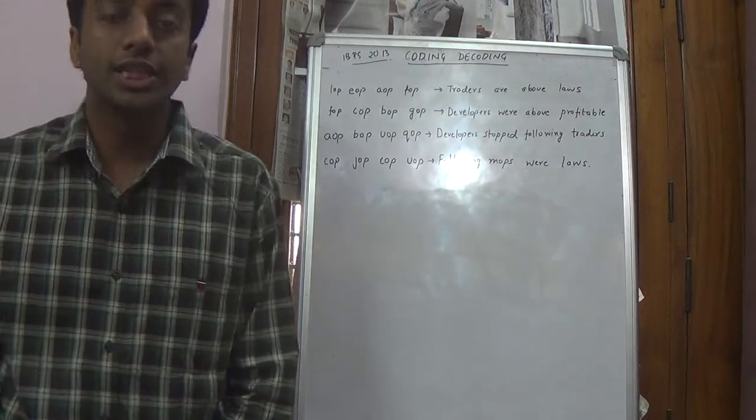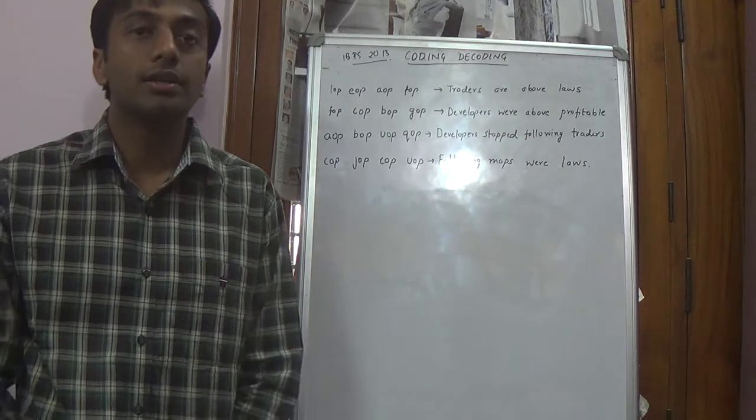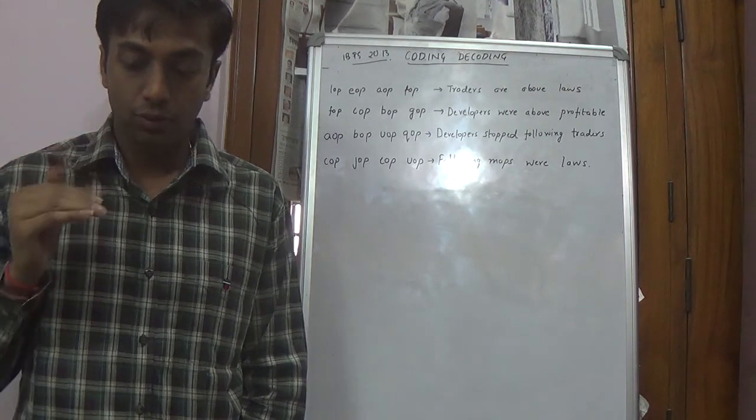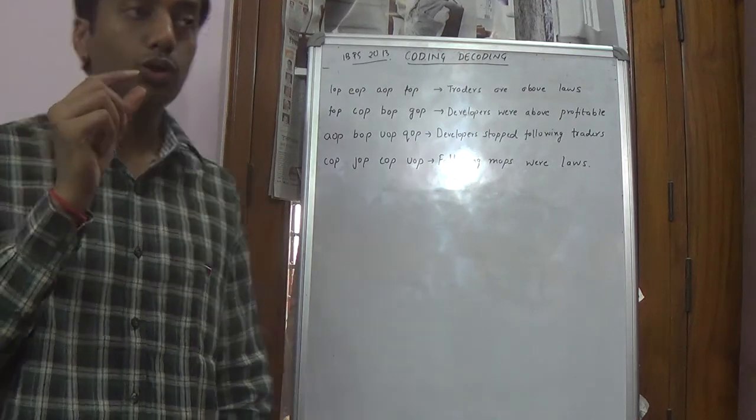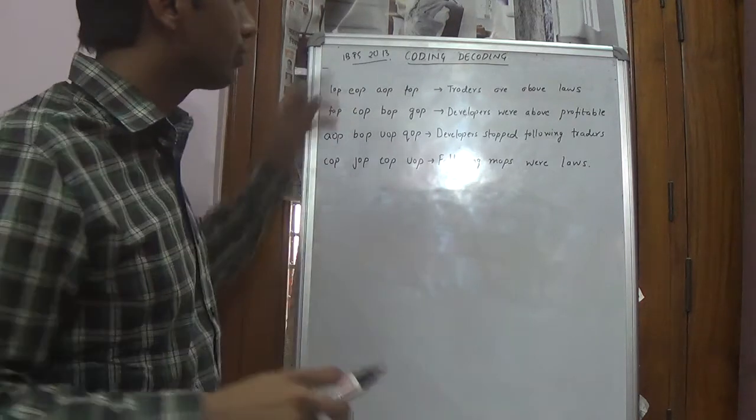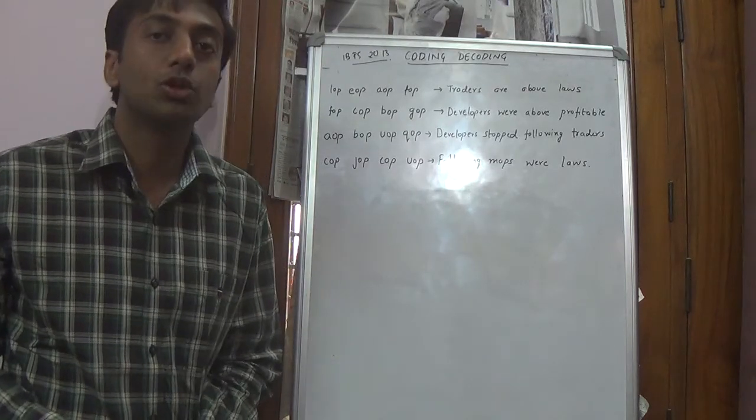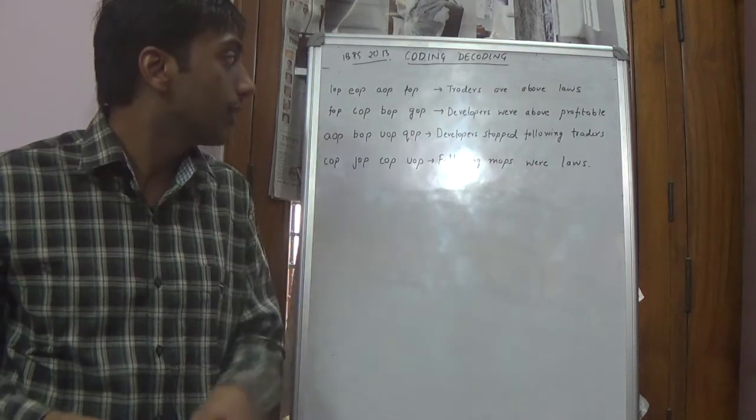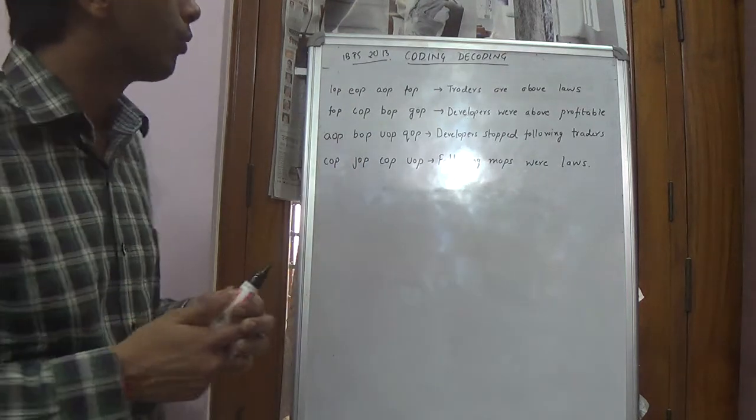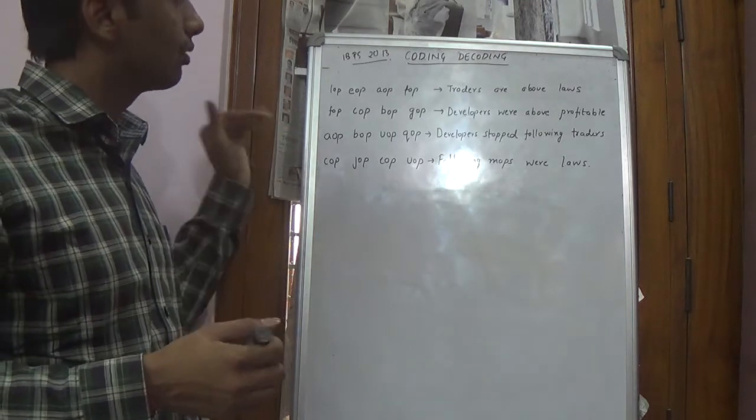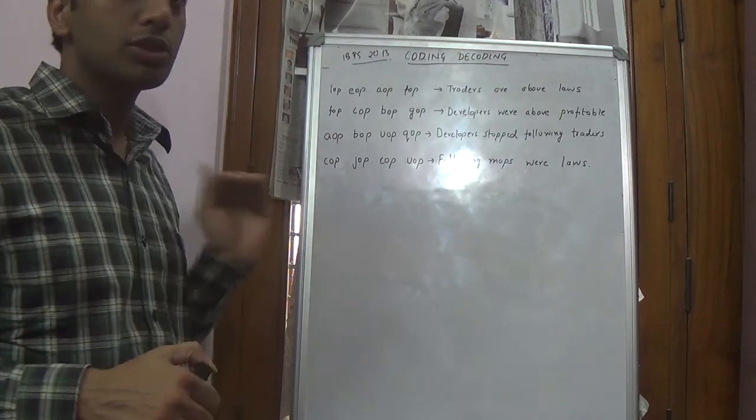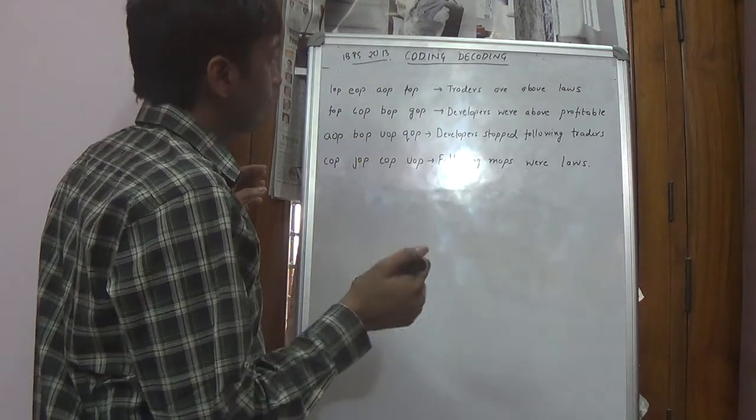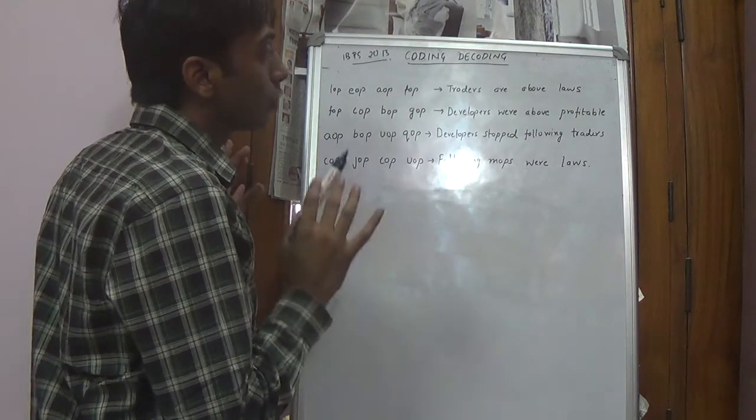Hello friends. Today the topic we will study is coding decoding. In this topic there are some codes given for a particular word and there are set of codes. So we have to identify what code represents what word. This is the IBPS 2013 question. There were 4 questions from this topic in IBPS 2013. This is also a very important topic and I think a pretty easy one. Because there is a method to it and you could definitely get it right. So there is no option of getting it wrong. Either you get it right or you don't get it.